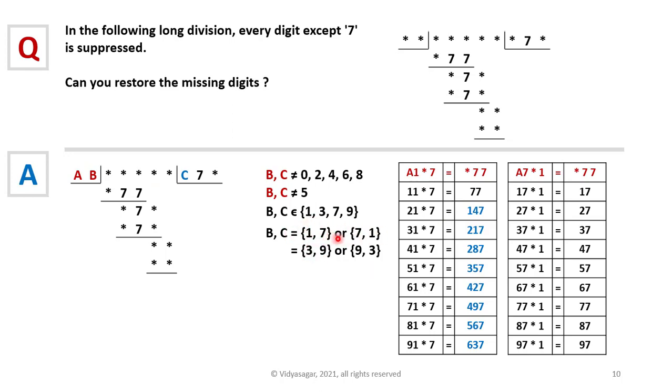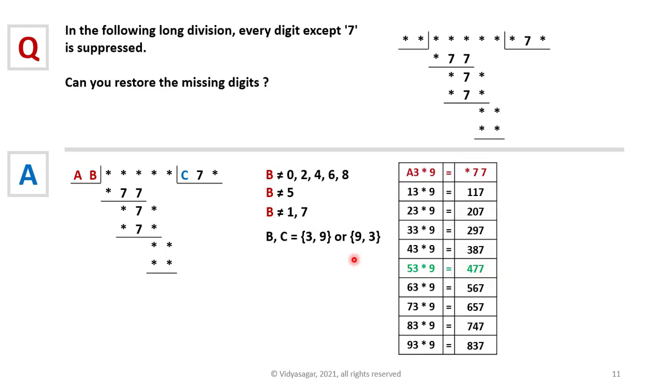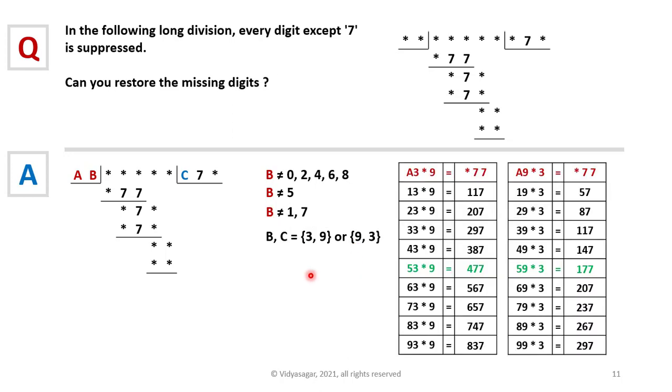Now let's repeat this process by taking B and C as 3-9 or 9-3. From this table you can see that both options—that B is 3 and C is 9, and B is 9 and C is 3—are resulting in a three-digit number ending with 77.